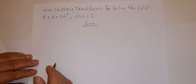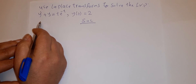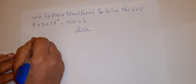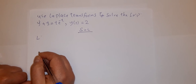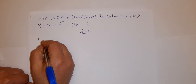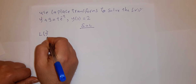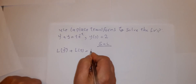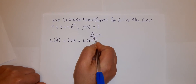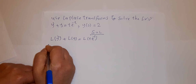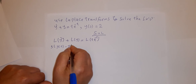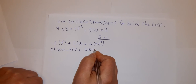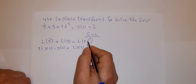Now we have another example. We have to solve this initial value problem — apply Laplace transforms to each term. We have L{y'} + L{y} = L{t·e^(−t)}. As usual, L{y'} = s·L{y(t)} − y(0), plus L{y(t)}, equals L{t·e^(−t)}.